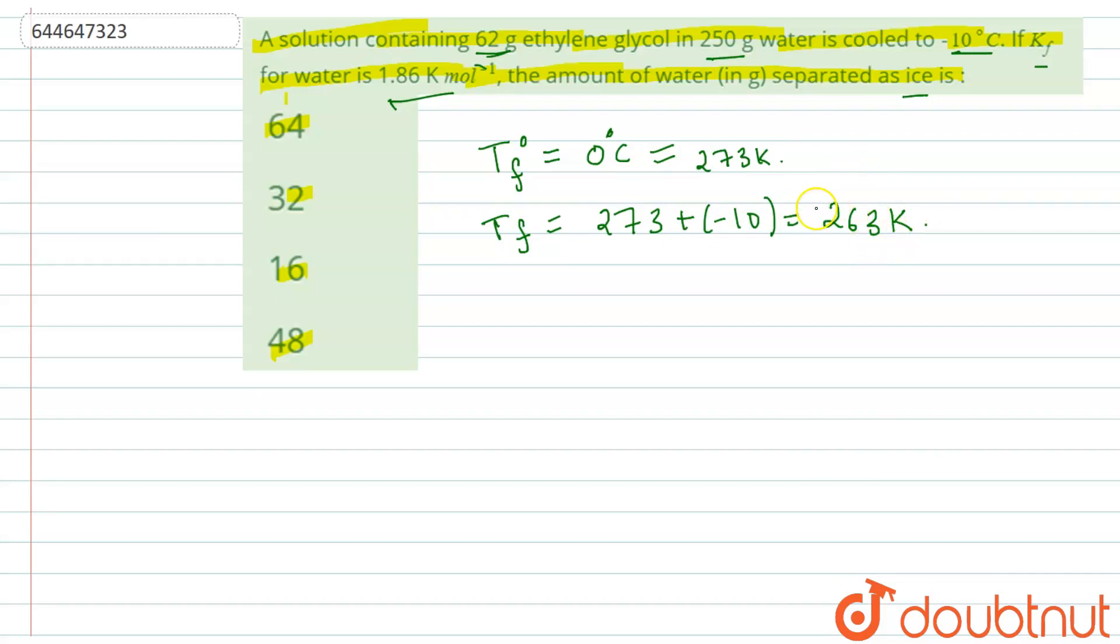So the depression in freezing point will be, that is, delta Tf is equals to 273 minus 263 is equals to 10 Kelvins.